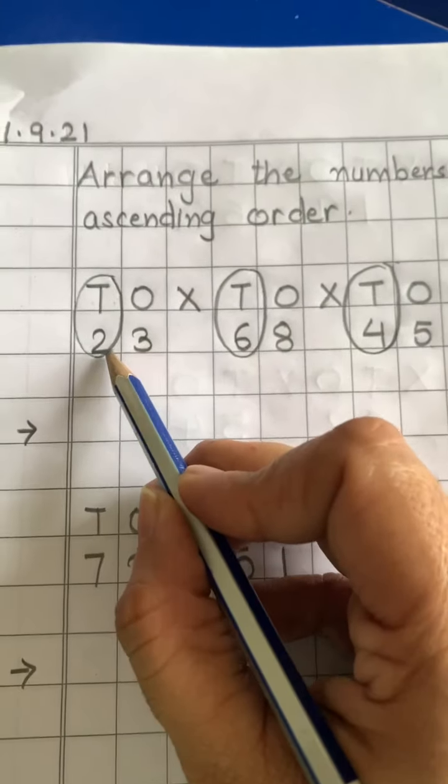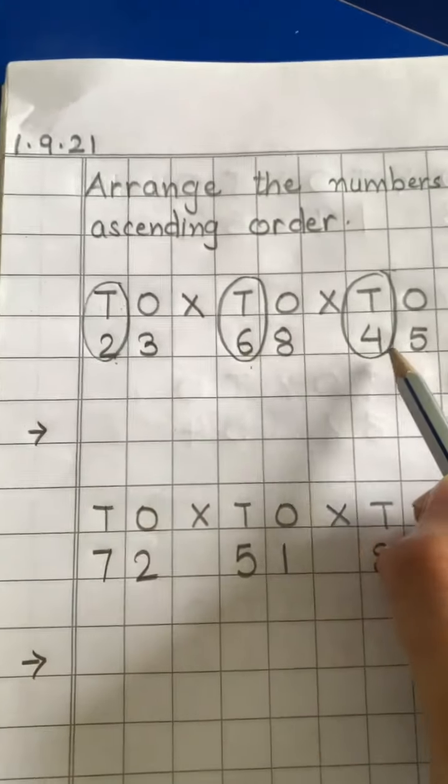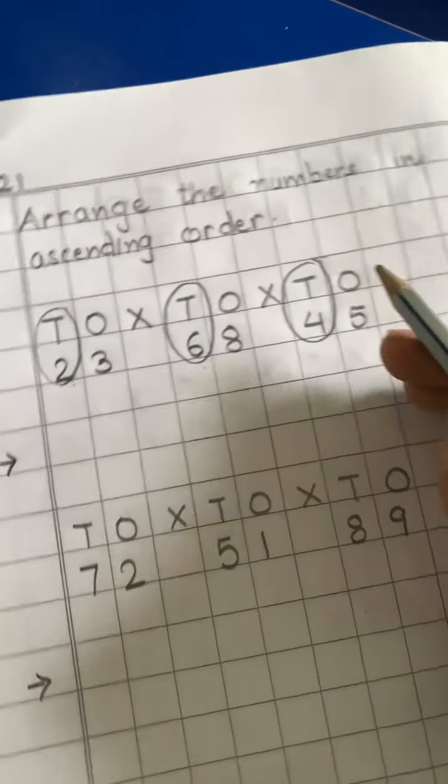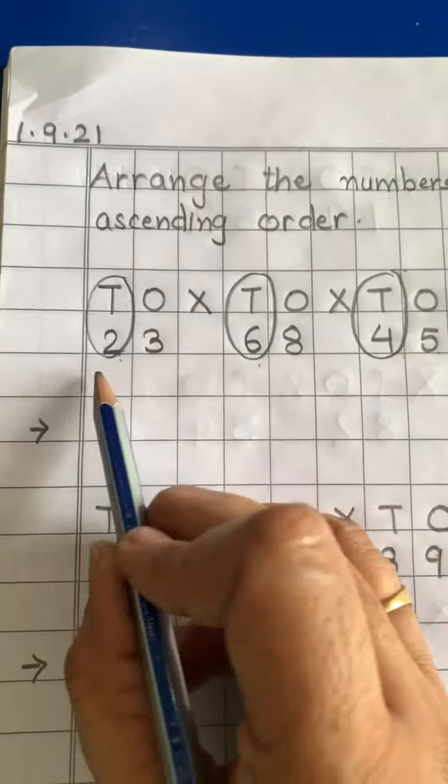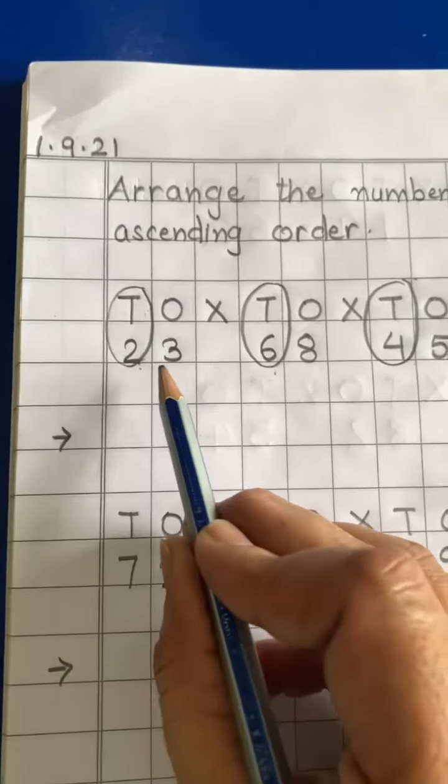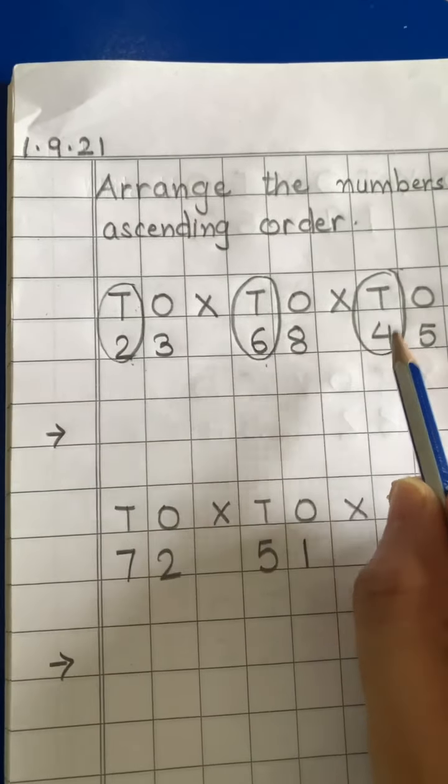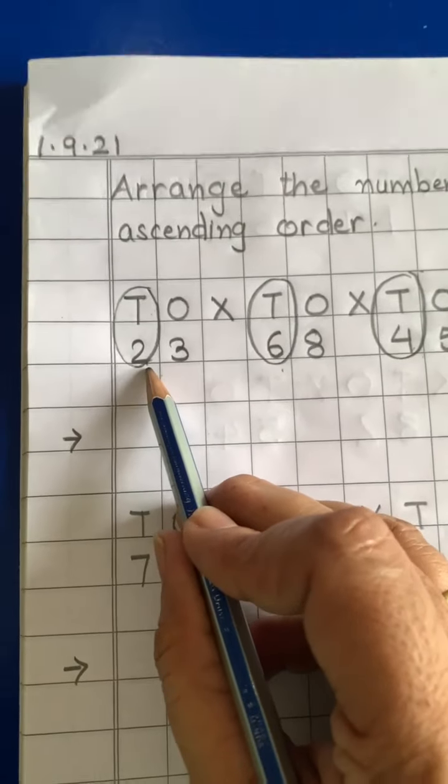Koon-konsa numbers hai 10th place pe? 2, 6, 4. Yes, now find out which is the smallest number. Subse chota number konsa hai? 2, 6, ya 4. 2 is the smallest number.